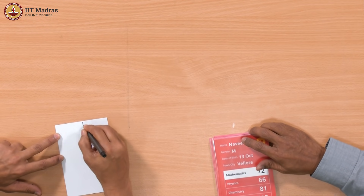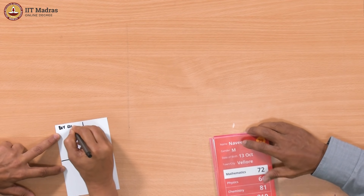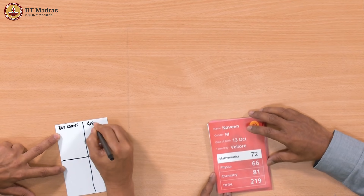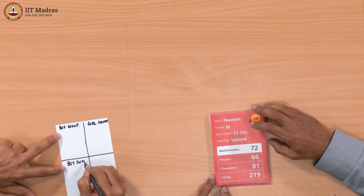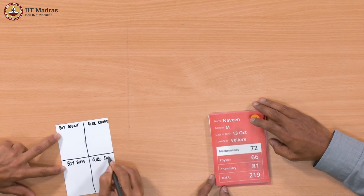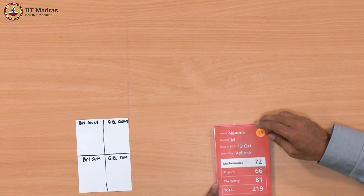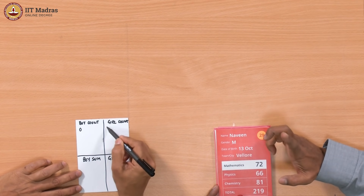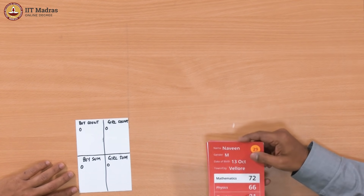We are going to do all of it in one iteration as we go through the cards. There is some filtering because we are looking at whether it is a boy or a girl, and then there is accumulation because we are adding the mathematics marks and counting. So we are counting, accumulating, and filtering all together in one shot.